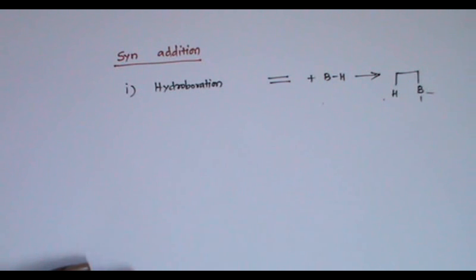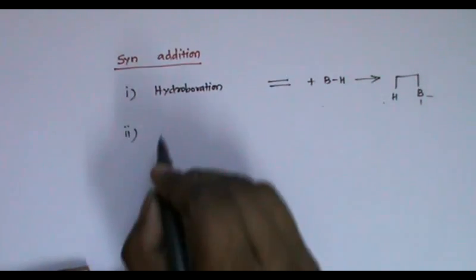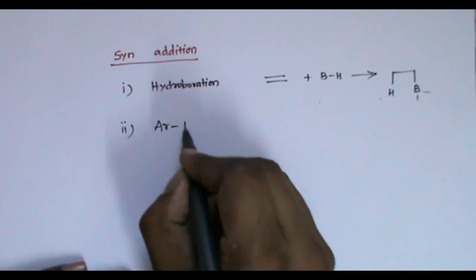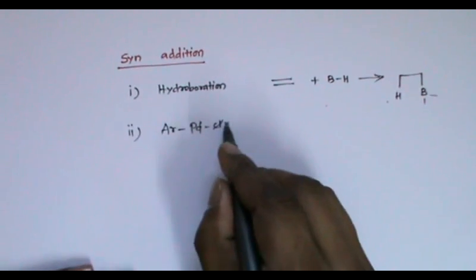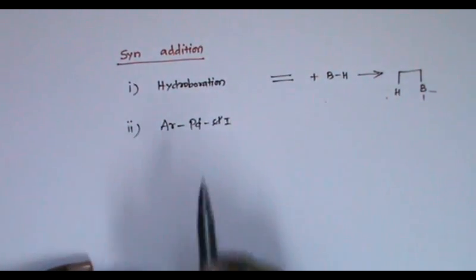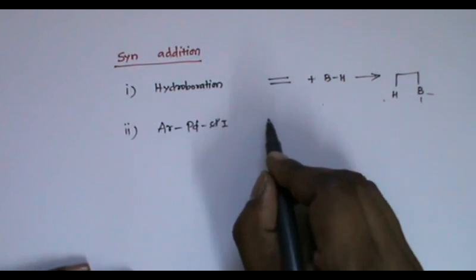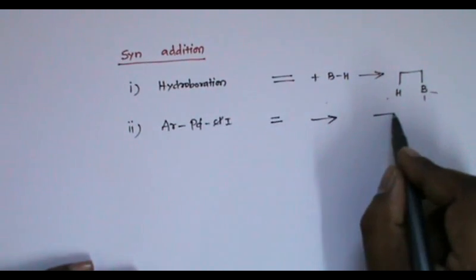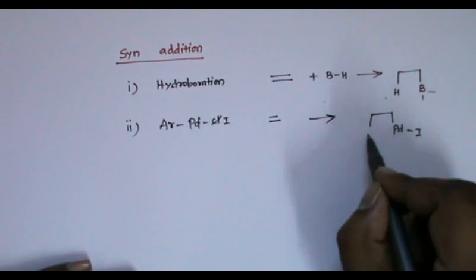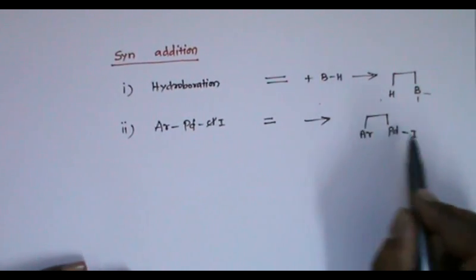The second syn addition reaction is palladium addition to a double bond. An iodine intermediate is formed — the Suzuki coupling or Heck coupling intermediate. When it is added to the double bond, what we get is a syn addition product where AR and palladium are cis to each other.